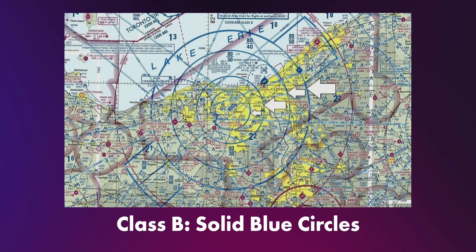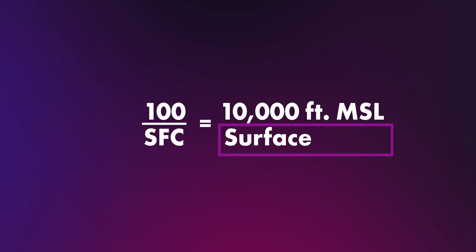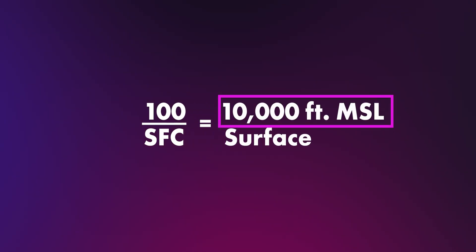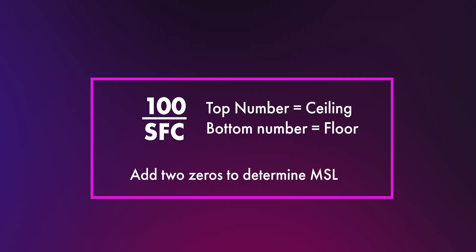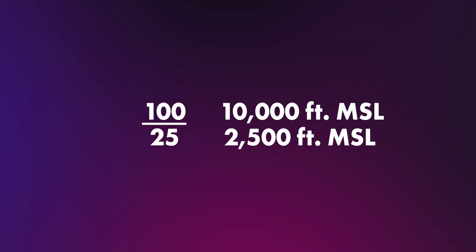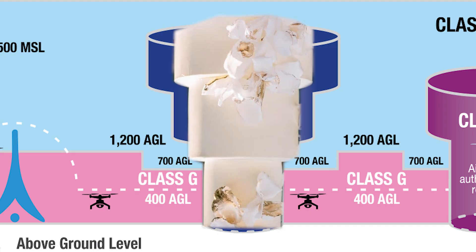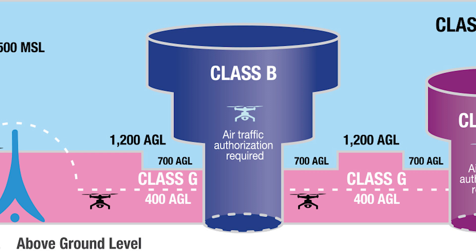Class B covers big and busy airports, depicted as solid blue concentric circles on a sectional chart. The numbers around each ring tell you the floor and ceiling in MSL. If you see 100 slash SFC, that means the airspace starts at the surface and goes up to 10,000 feet MSL. You need to add two zeros whenever you see numbers like this. So if you see 100 slash 25, that means from 2,500 feet MSL up to 10,000 feet MSL.